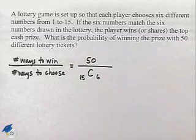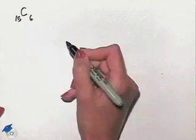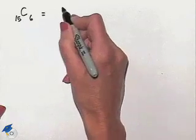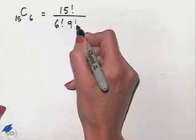Now let's figure out that value. We're going to have a combination of 15 taken six at a time. That can be evaluated as 15 factorial divided by 6 factorial times 9 factorial.